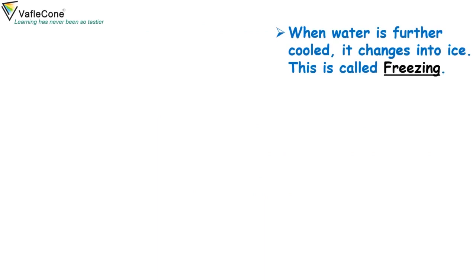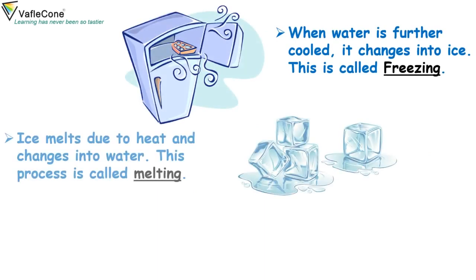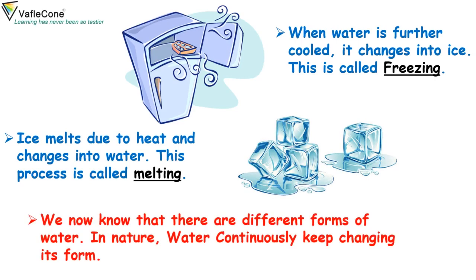When water is further cooled, it changes into ice. This is called freezing. Ice melts due to heat and changes into water. This process is called melting. We now know that there are different forms of water. In nature, water continuously keeps changing its form.